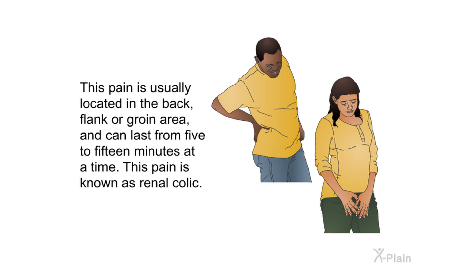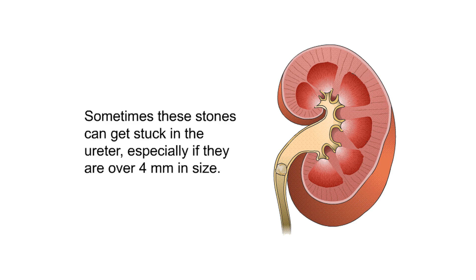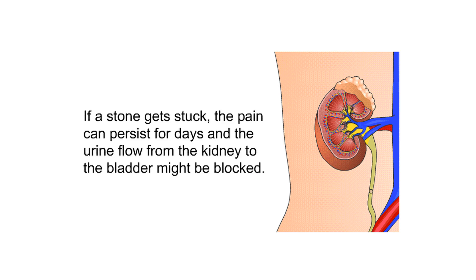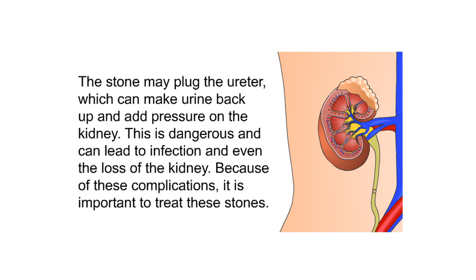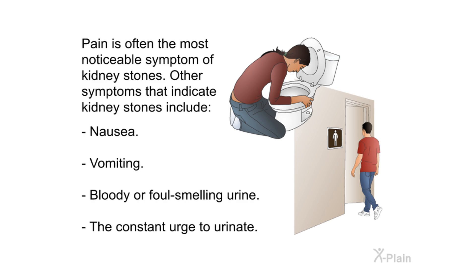Most people with smaller stones are able to pass them without a problem, but some people experience severe pain when the stones travel through the ureters. This pain is usually located in the back, flank, or groin area and can last from 5 to 15 minutes at a time. This pain is known as renal colic. Sometimes these stones can get stuck in the ureter, especially if they are over four millimeters in size. If a stone gets stuck, the pain can persist for days and urine flow from the kidney to the bladder might be blocked.